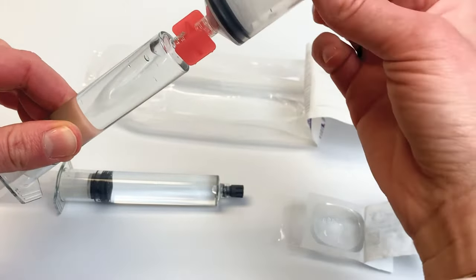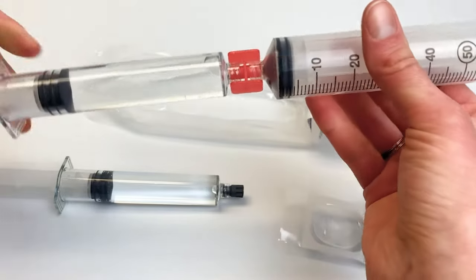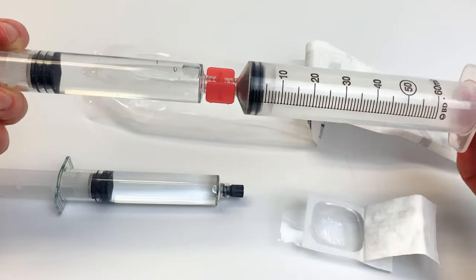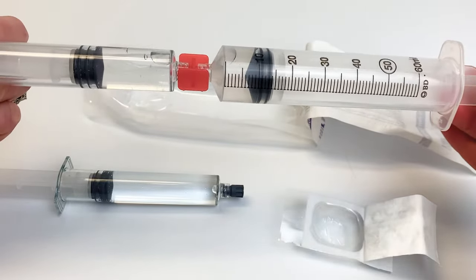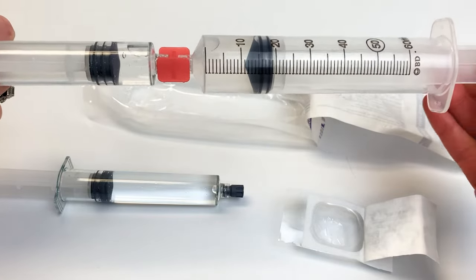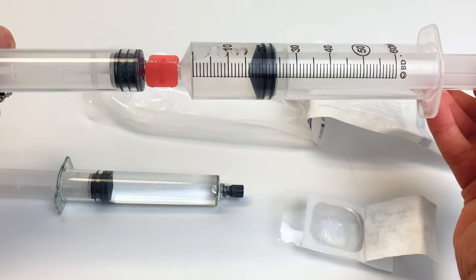Then attach the BD syringe to the other end of the transfer device. Push the plunger of the pre-filled syringe to move the medication into the BD syringe until the dose is fully transferred.